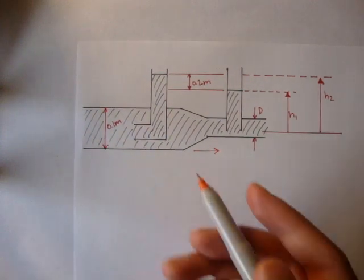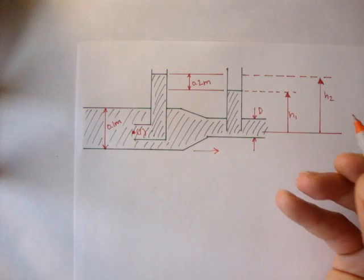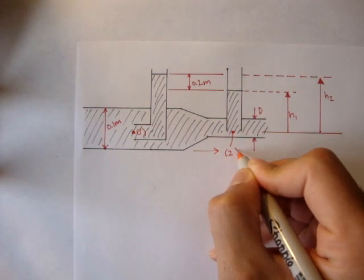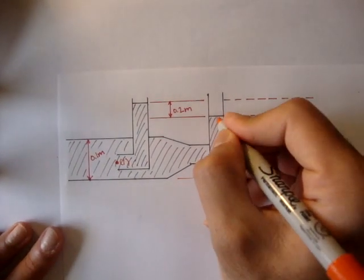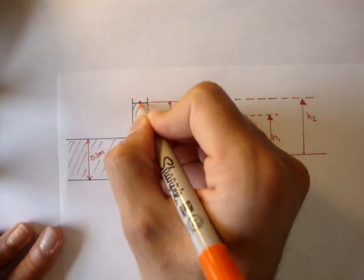Let's start off by labeling some points. Here we can label point one. Here we can label point two. Maybe we can label this point three. And up here we can label this point four.